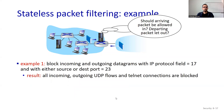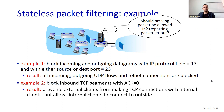For example, you want to block incoming and outgoing datagrams with IP protocol field equal to 17 and with either source or destination port equal to 23. Result: all incoming and outgoing UDP flows and Telnet connections are blocked. Second example: block inbound TCP segments with ACK equal to zero. This prevents external clients from making TCP connections with internal clients, because connections cannot be initiated from outside, but from inside you can initiate outbound TCP — this allows internal clients to connect to outside.